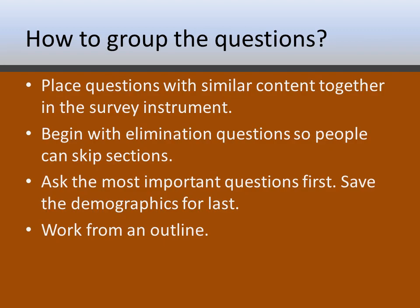In terms of putting your survey together after brainstorming, group questions of similar content — you're essentially creating an outline. If you can, begin each section with an elimination question. In our children's ministry survey, a section began with 'Do you have a vacation Bible school?' If yes, complete the questions; if no, skip that section entirely. Putting elimination questions up front makes the survey faster to complete, and as people finish each section they get a sense of accomplishment, making them more likely to continue to the end.